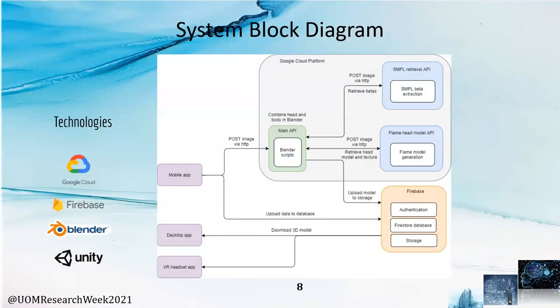This is the system block diagram of our project. On the left, we have the client-side applications with mobile and VR apps supporting Android and a desktop application which supports Windows. On the right side, we have the server-side part developed mostly using Python and deployed in Google Cloud Platform. Once the server-side pipeline is done, the user is able to download their 3D model from anywhere and anytime using the VR app and try on different clothes on them.